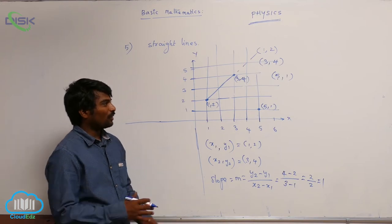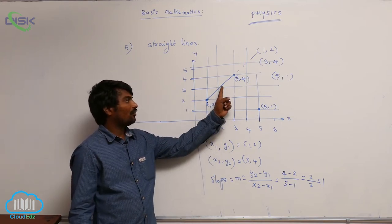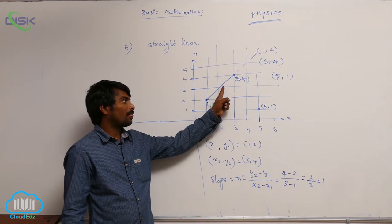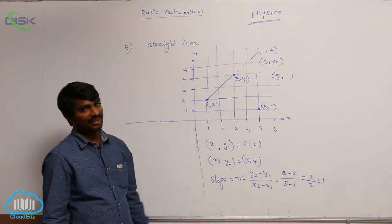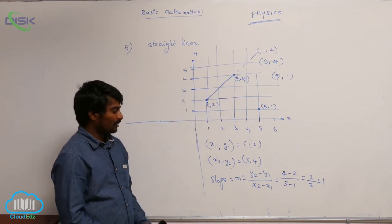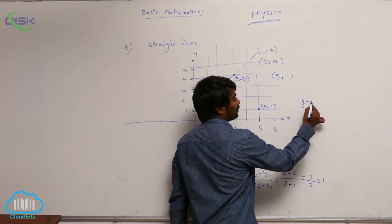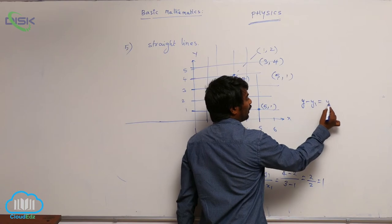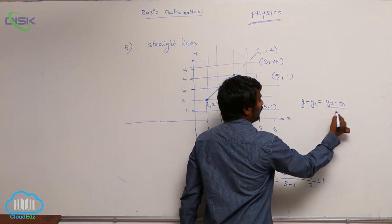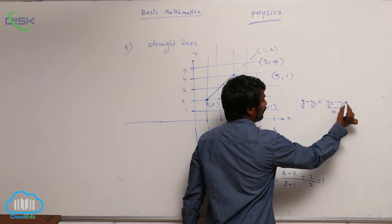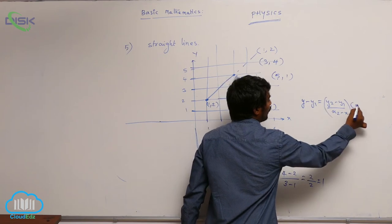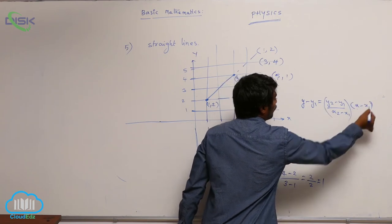Suppose if you want to calculate the equation of straight line, what is the formula that you use? y minus y1 is equal to (y2 minus y1) by (x2 minus x1) into (x minus x1). Is it right?